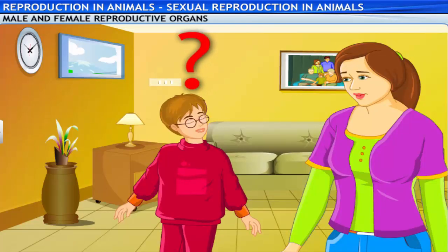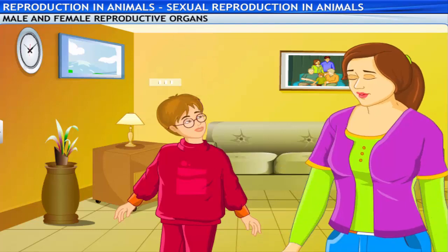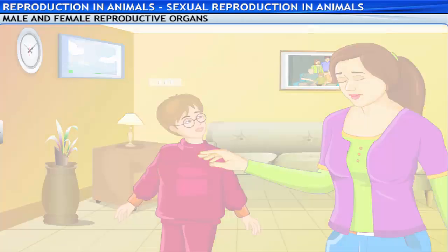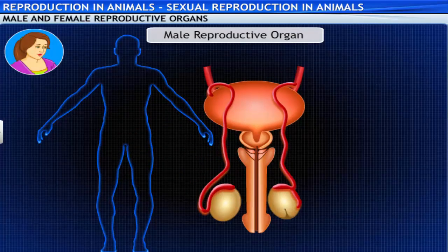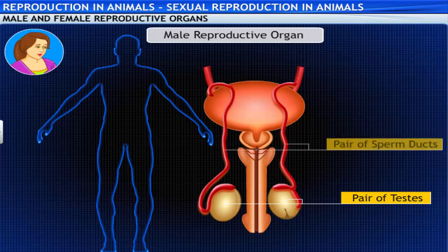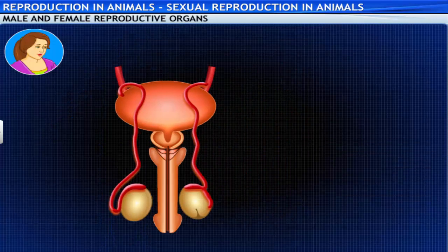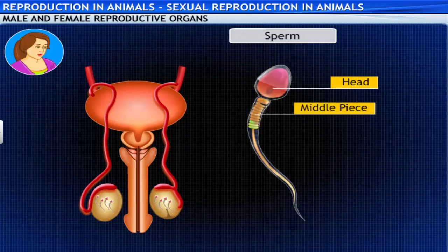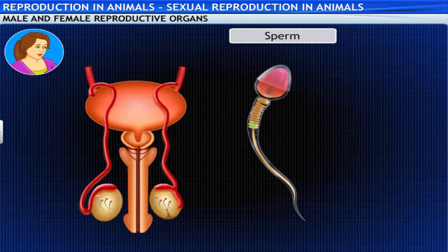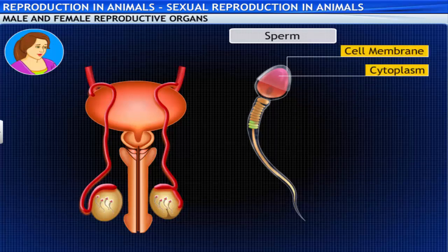Which reproductive organs produce gametes? They are different for males and females. Let's look at male reproductive organs first. Male reproductive organs include a pair of testis that produce the sperm or the male gamete, two sperm ducts, and a penis. The male gametes, called sperms, have a head, a middle piece and a tail. The sperms resemble a tadpole in their body structure. Each sperm is a single cell that contains all the cell components, such as cell membrane, cytoplasm and nucleus.